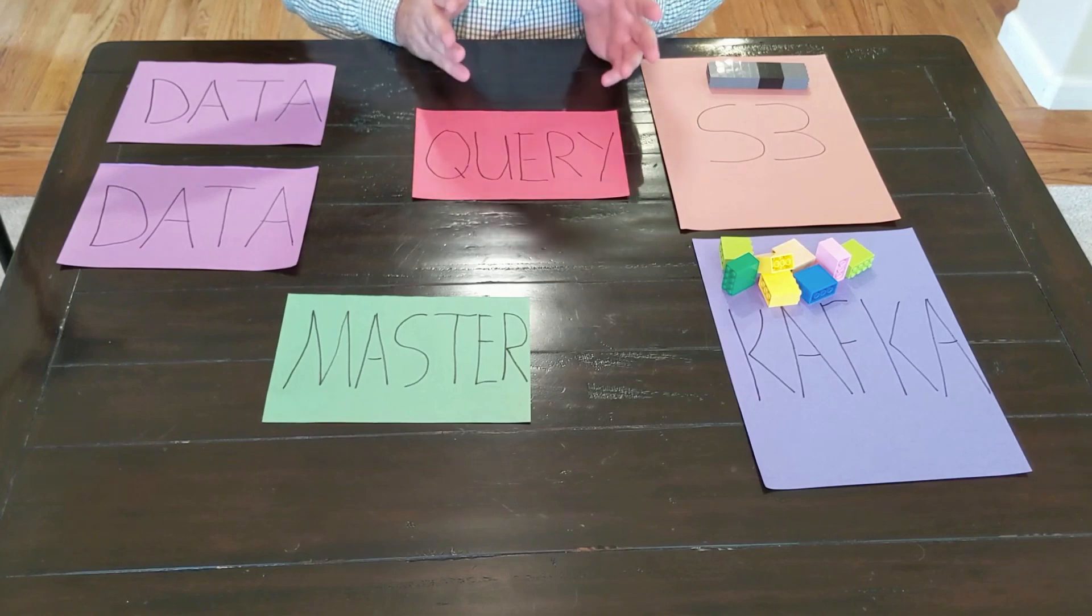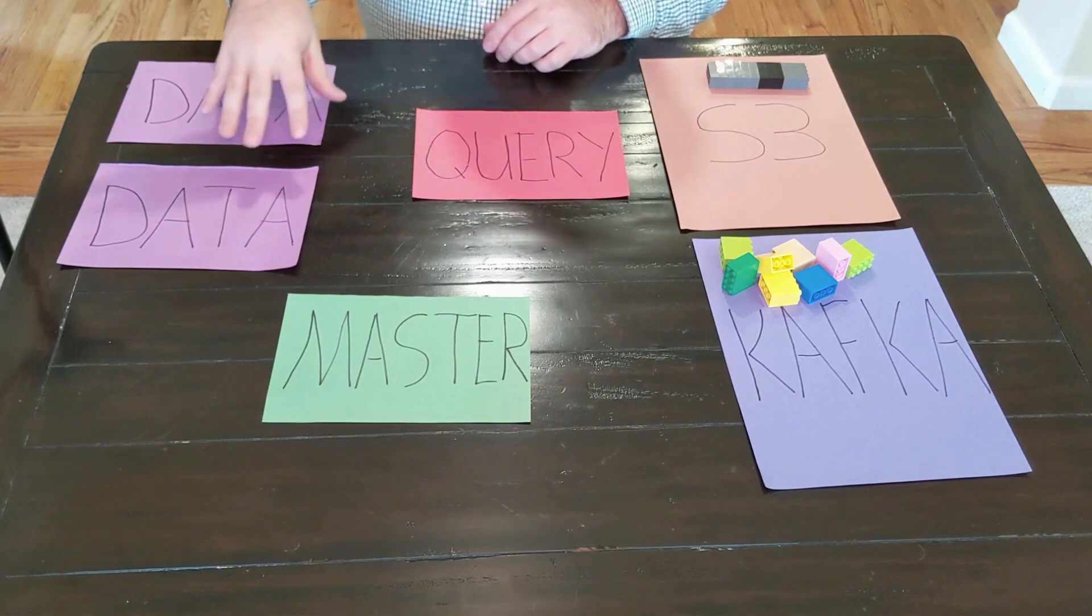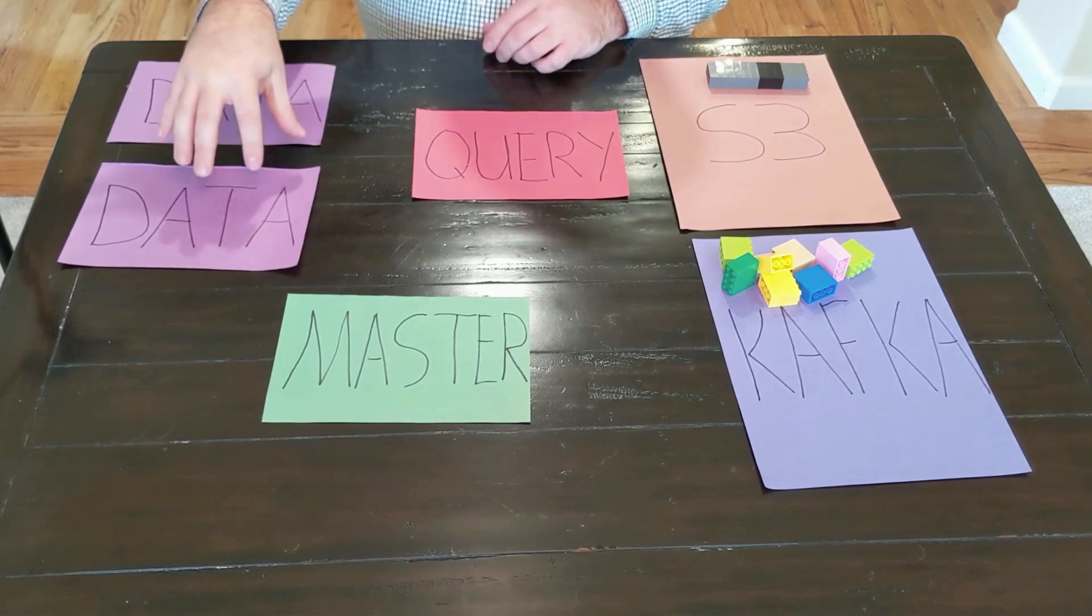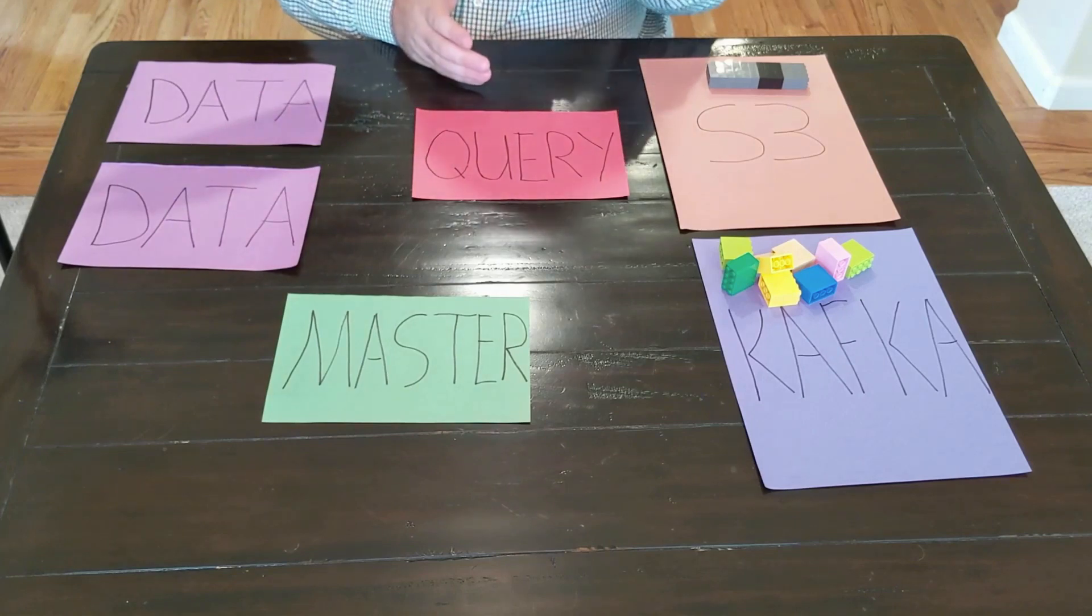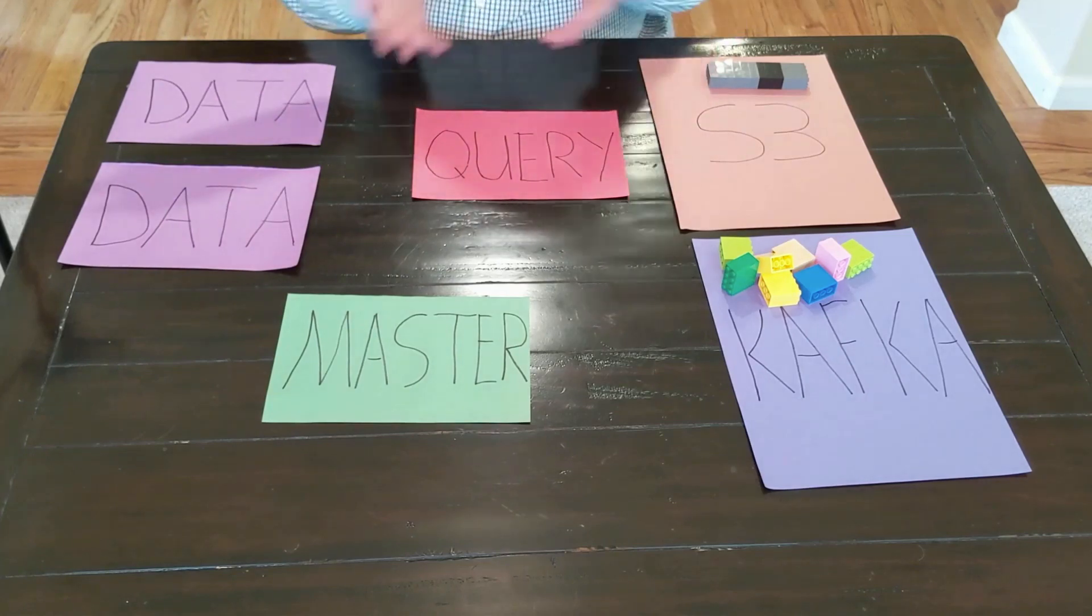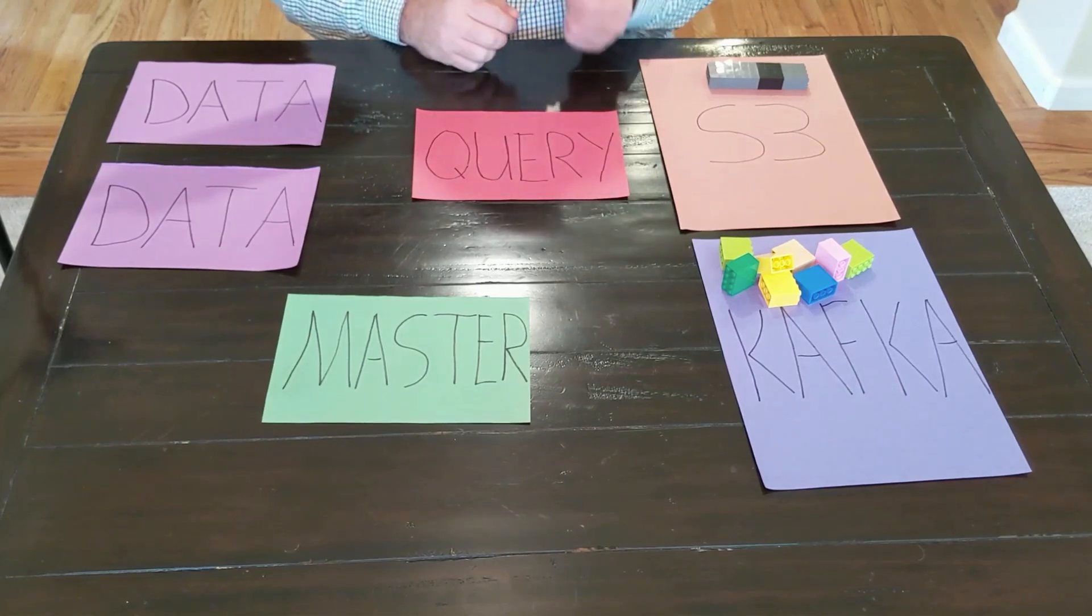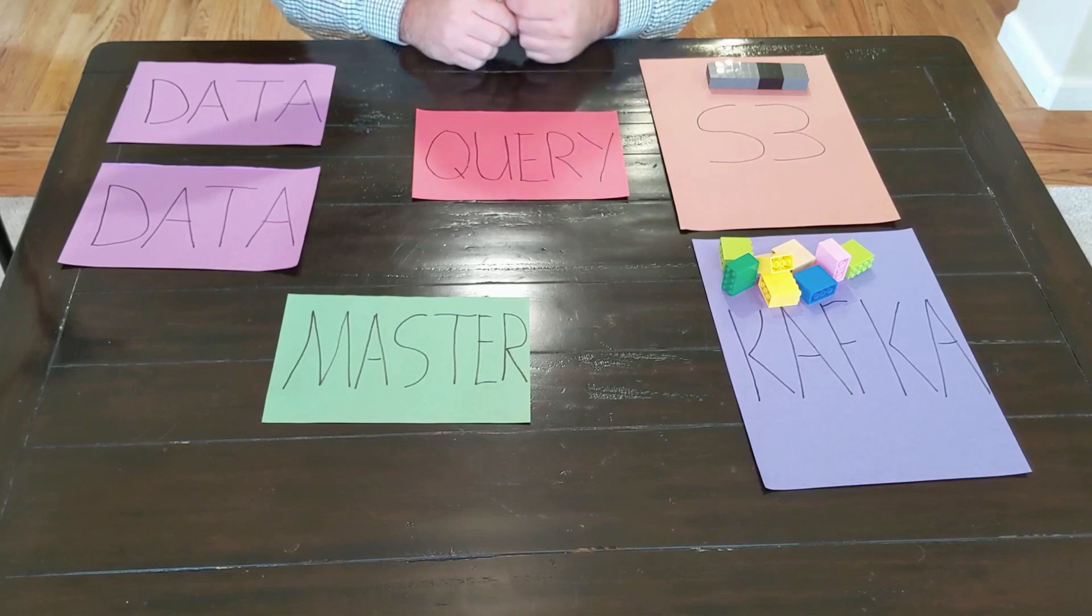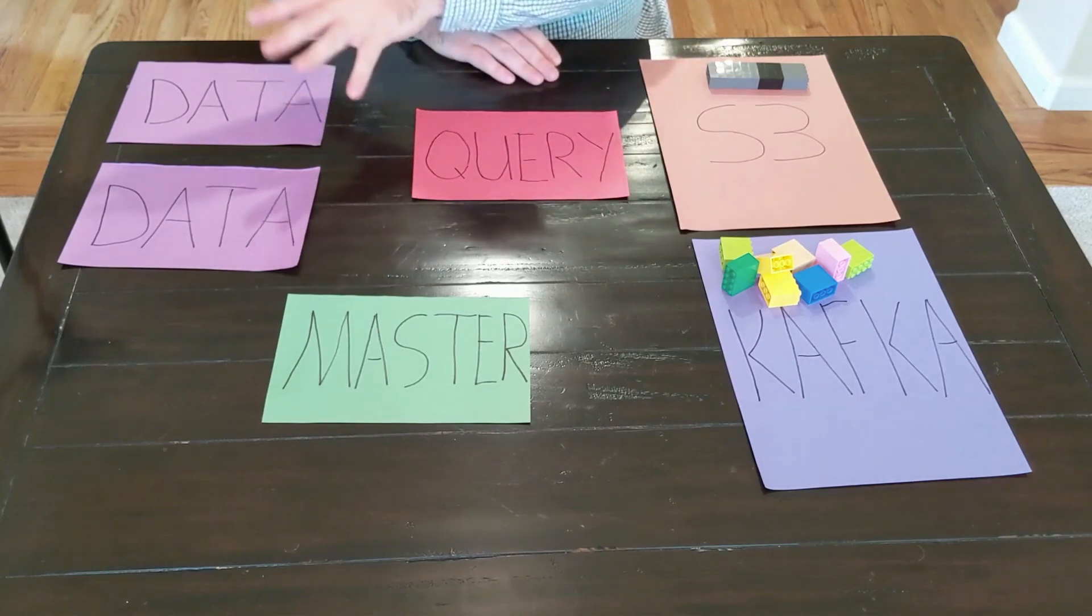Another thing to know about Druid is that Druid has its own file format. It's a column-oriented format, and it's specific to Druid. And the importance there is because when we have a query that runs on our data, that data isn't just organized in some arbitrary format. It's actually done in a format that makes the queries in Druid operate significantly faster. And there's a lot of details that go into that file format.